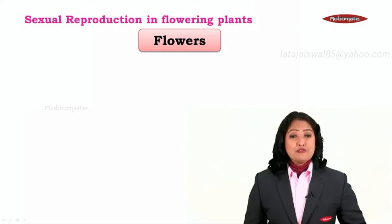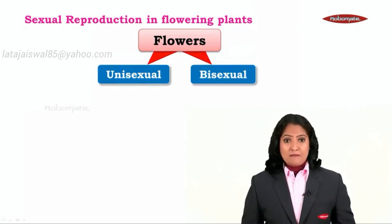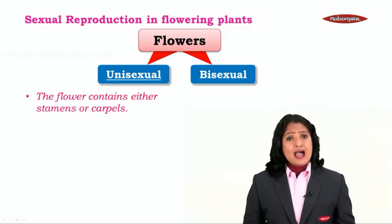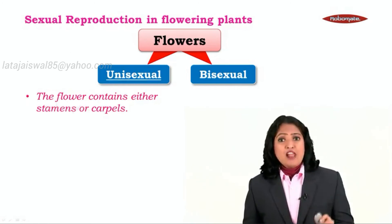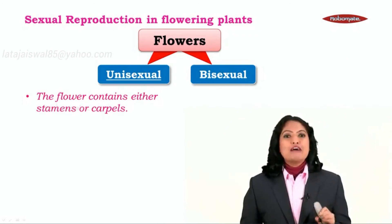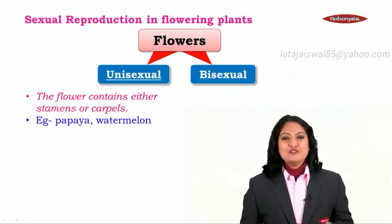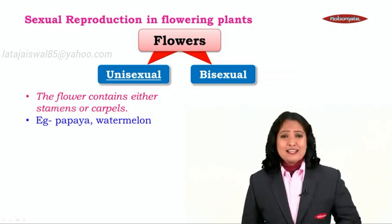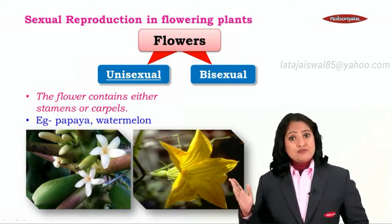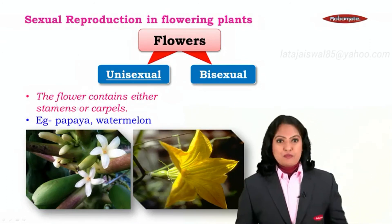In nature we have two kinds of flowers — some flowers are exclusively unisexual while some are bisexual. After learning about stamens and carpels, let us understand that some flowers either have only stamens or only carpels — they do not have both the male and female reproductive parts together. Such flowers are called unisexual, and classic examples are the papaya plant and watermelon. These flowers will either bear stamens or carpels, but not both.